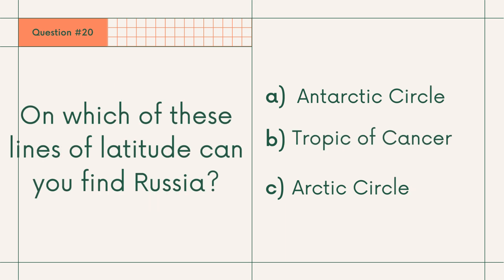Question 20: On which of these lines of latitude can you find Russia? A. Antarctic Circle, B. Tropic of Cancer, or C. Arctic Circle. Answer: C. Arctic Circle.